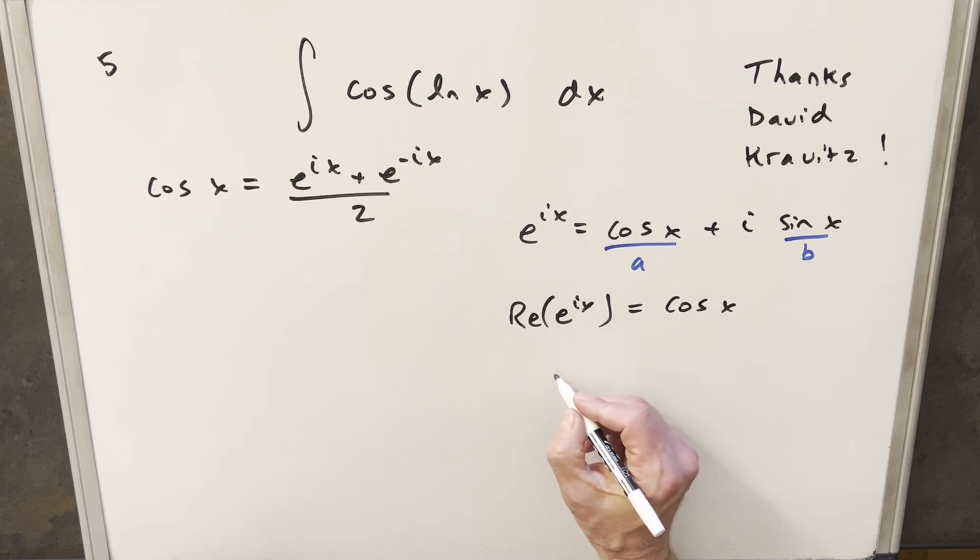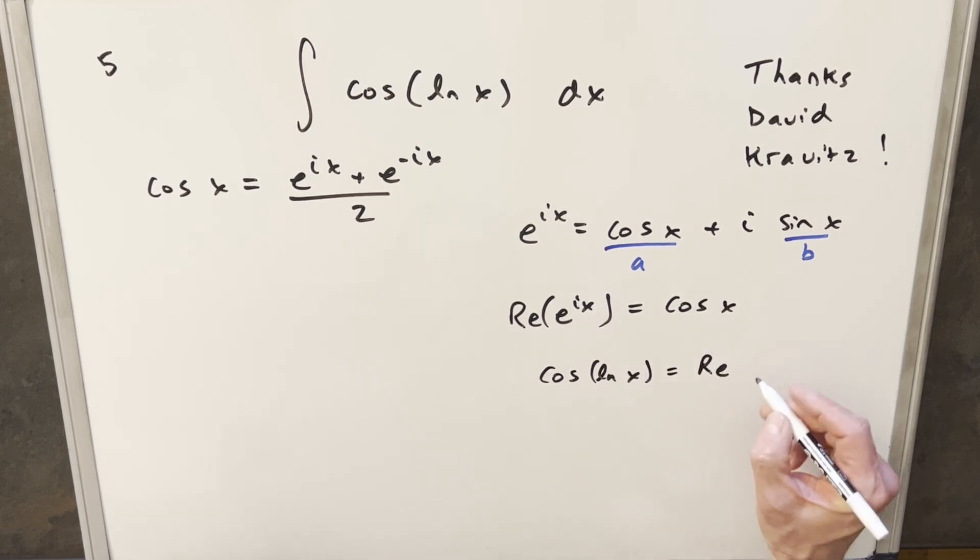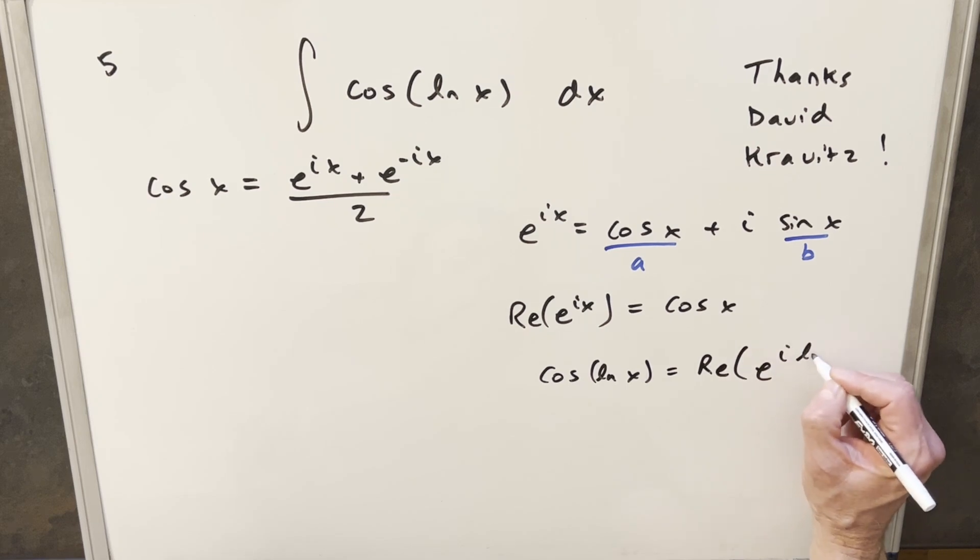All I need to do is I want to do the same thing. I want an expression for the cosine of ln x. Well, all I need to do is plug in the ln x here. So this is going to be the same thing as the real part of e to the i ln x.